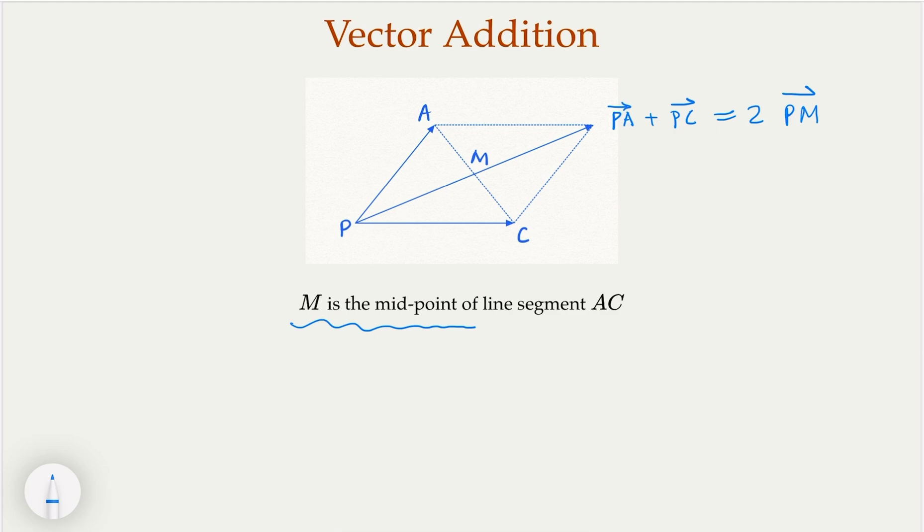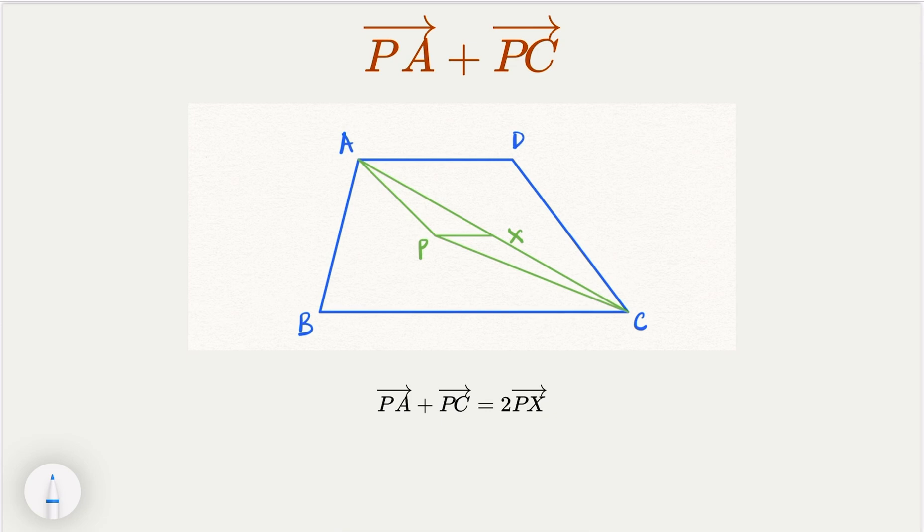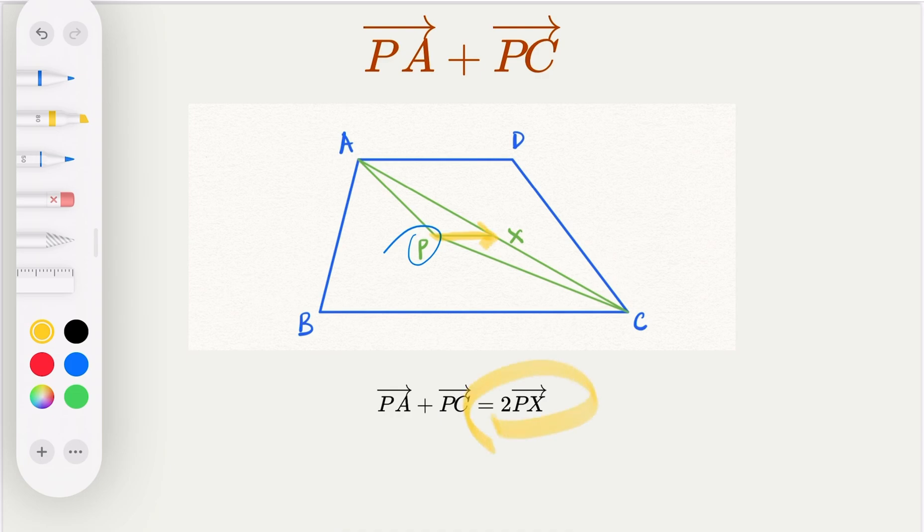And here in this parallelogram, AC midpoint M, and I claim that PA plus PC is going to be twice of PM. So we're going to apply this in our problem here ABCD. Notice that we have PA, P is a point inside. And this vector addition, I claim that the resulting vector is going to be 2PX. What is X? X is the midpoint of AC as a line segment.